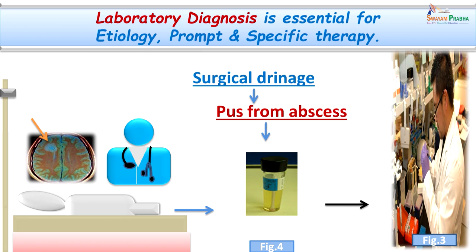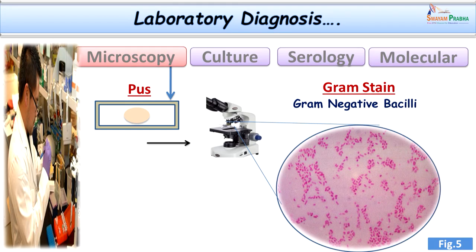Laboratory diagnosis is very important in such cases because we need to know the etiology — that is, which microorganisms or bacteria are causing brain abscess — which will help us initiate prompt and specific therapy. Surgical drainage of the abscess was done. The pus was collected in fluid thioglycolate broth and immediately sent to the laboratory. Gram stain of the pus showed gram-negative short and delicate pleomorphic bacilli, with some longer and some coccobacillary forms.